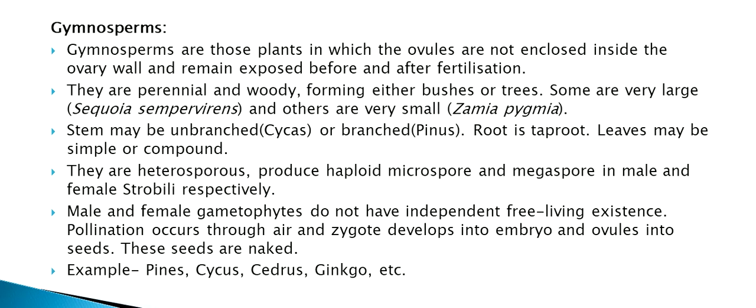Next are gymnosperms. Gymnosperms are those plants in which the ovules are not enclosed inside the ovary wall and remain exposed before and after fertilization. They are perennial and woody, forming either bushes or trees. Some are very large and others are very small. Stem may be unbranched or branched. Root is taproot. Leaves may be simple or compound.